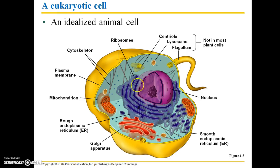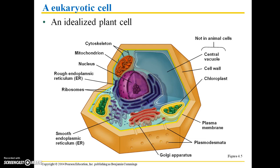This is an idealized animal cell. Animal cells typically do not have a cell wall — they just have a membrane — and they're eukaryotic cells, so they have complex organelles as well as a membrane-bound nucleus. This is an idealized plant cell. The main difference between a plant cell and an animal cell is the cell wall. Plant cells also have a central vacuole, which animal cells do not.